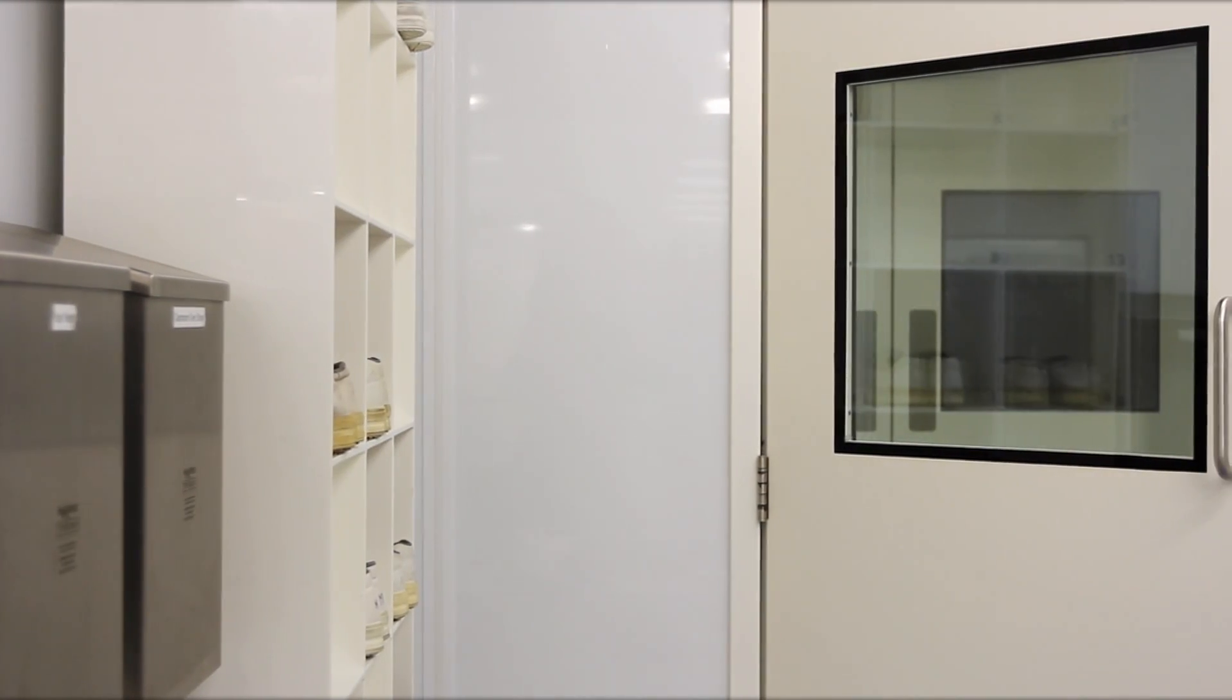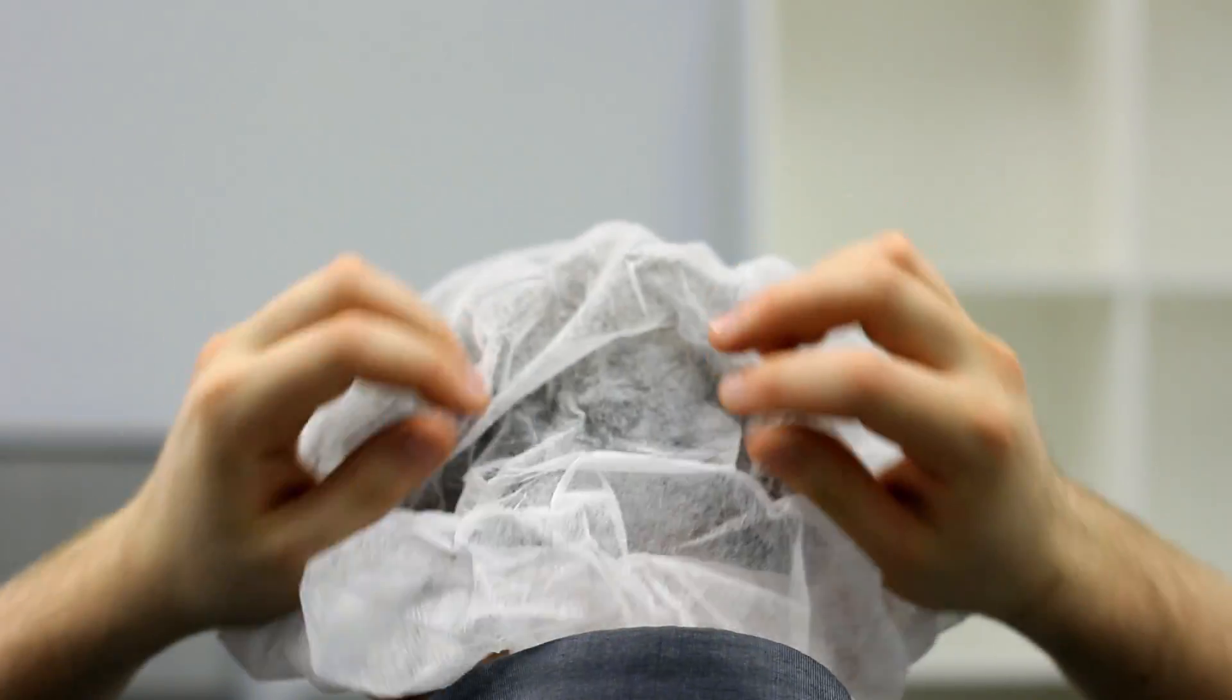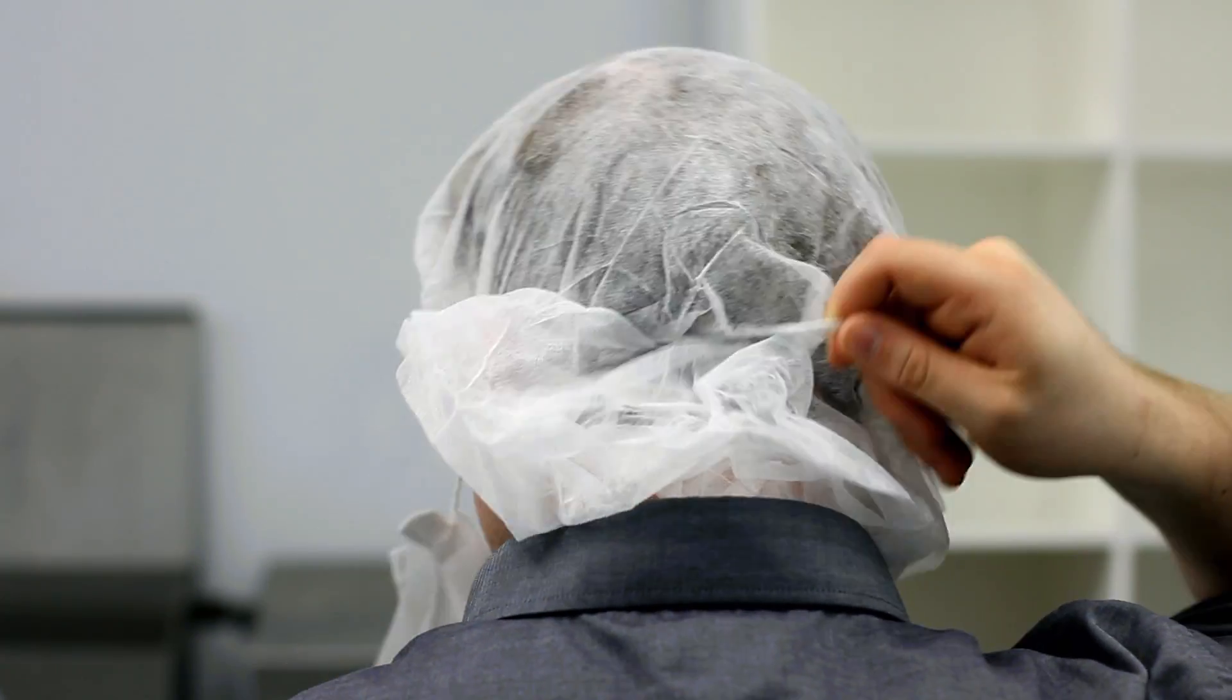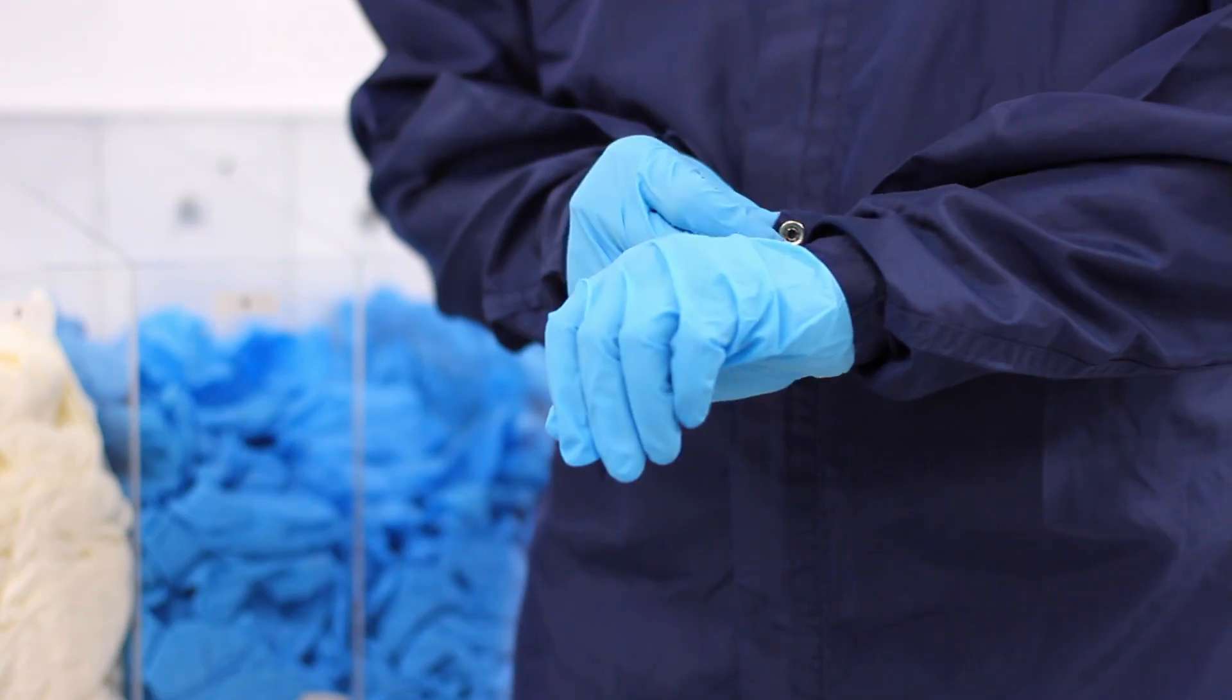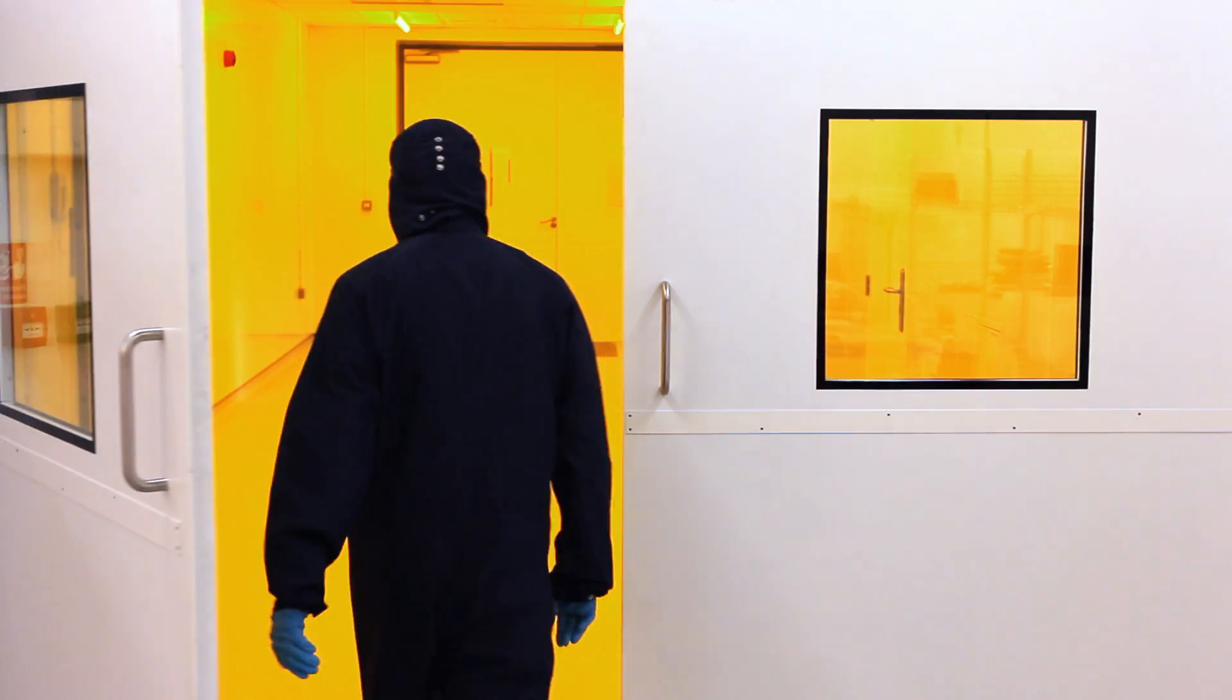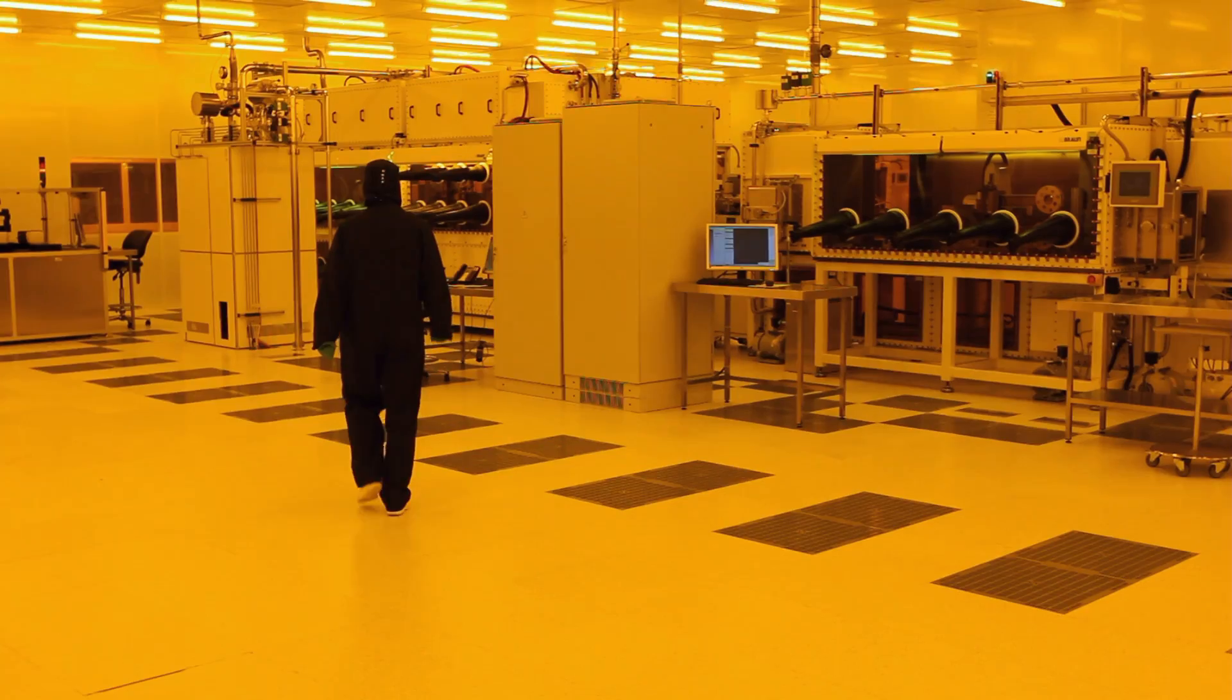CPI's OLED OPV prototyping line has been designed to enable the development and production of both organic light-emitting diode and organic photovoltaic technologies. The line enables users to address some of the challenges faced by the industry in scaling up the technology to wide area and, ultimately, commercialisation.